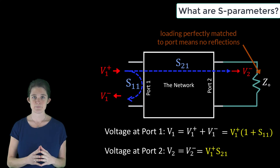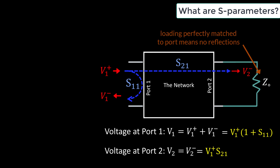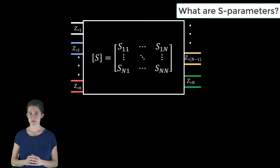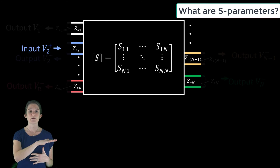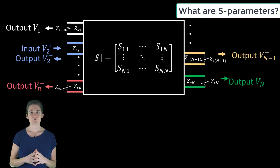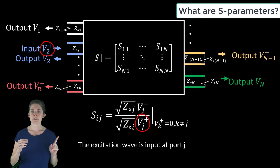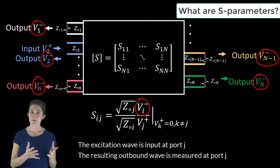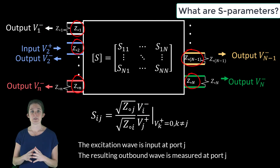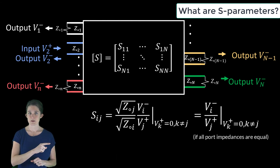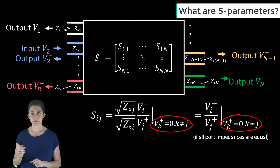Characterization of an n-port network with S-parameters requires n measurements, each consisting of a known input wave at one port with all other ports match-terminated. Formally, each element of the S-matrix may be calculated using the formula where vj-plus is the inbound wave at port j, vi-minus is the outbound wave at port i, and Z0i and Z0j are the characteristic impedances at ports i and j respectively. If all network ports share the same characteristic impedance, the formula simplifies accordingly.